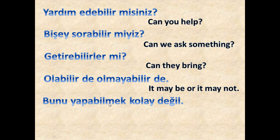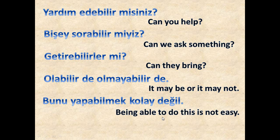'Bunu yapabilmek kolay değil.' Here I have put the infinitive form of 'bil' — we have the 'geniş zaman' form 'bilir' in conjugated sentences, but here I have put the infinitive form, so you can see how 'bil' can be used in different ways — not only 'abilir/ebilir', but also 'abilmek/ebilmek'. 'Bunu yapabilmek kolay değil' means 'being able to do this is not easy'.